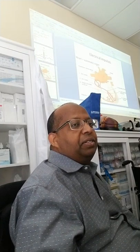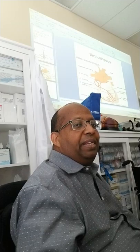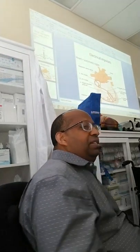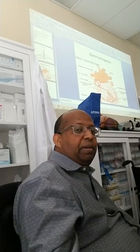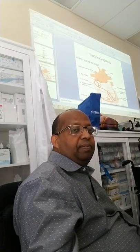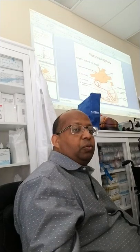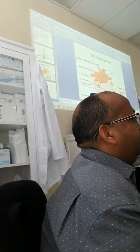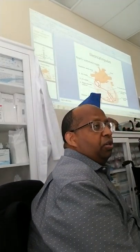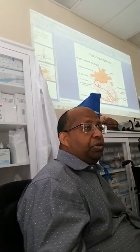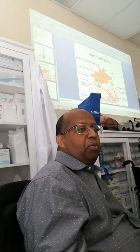Next is the bundle of His, also called the AV bundle — it's like a short fiber segment that takes the impulse from the AV node to the bundle branches. Then there are right and left bundle branches. There are usually conditions called right and left bundle branch block.